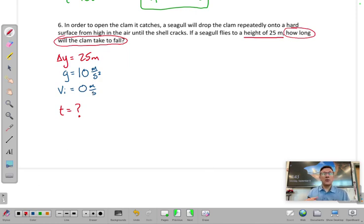Did this problem give us a number for or ask us to solve for change in position? Answer there is yes. It gave us the change in position of the clam. It fell 25 meters. So the height here is the same thing as the change in position. So we will eliminate equation one.